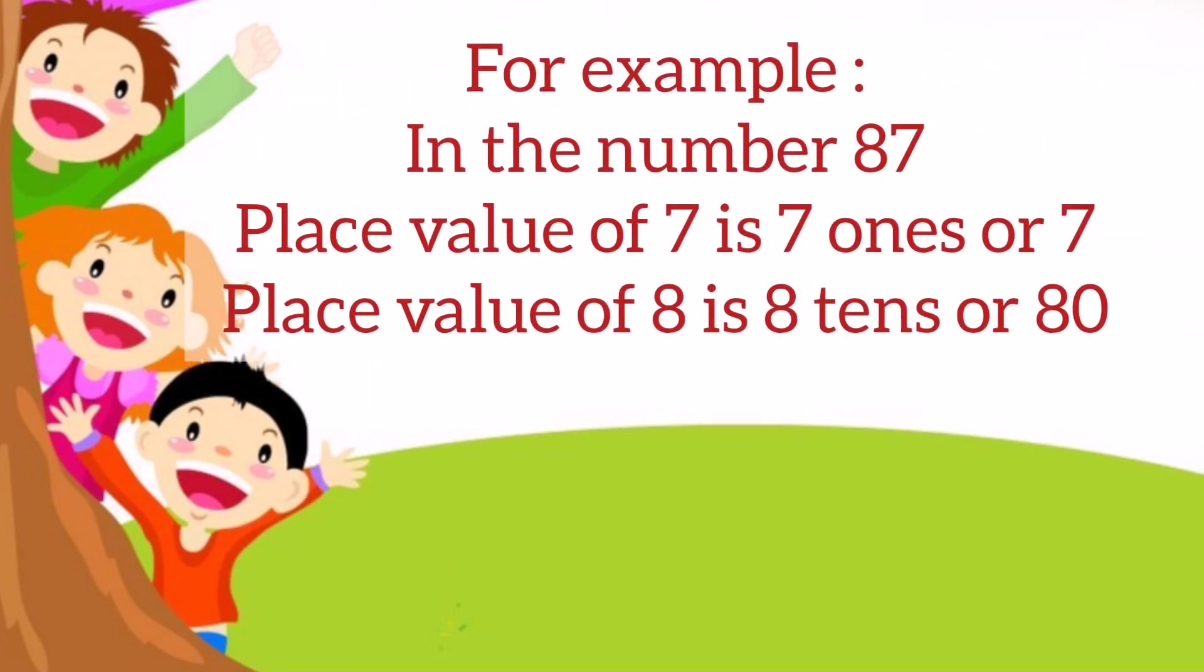For example, in the number 87, place value of 7 is 7 ones or 7 because 7 is in the ones place. Whereas place value of 8 is 8 tens or 80 because 8 is in the tens place.